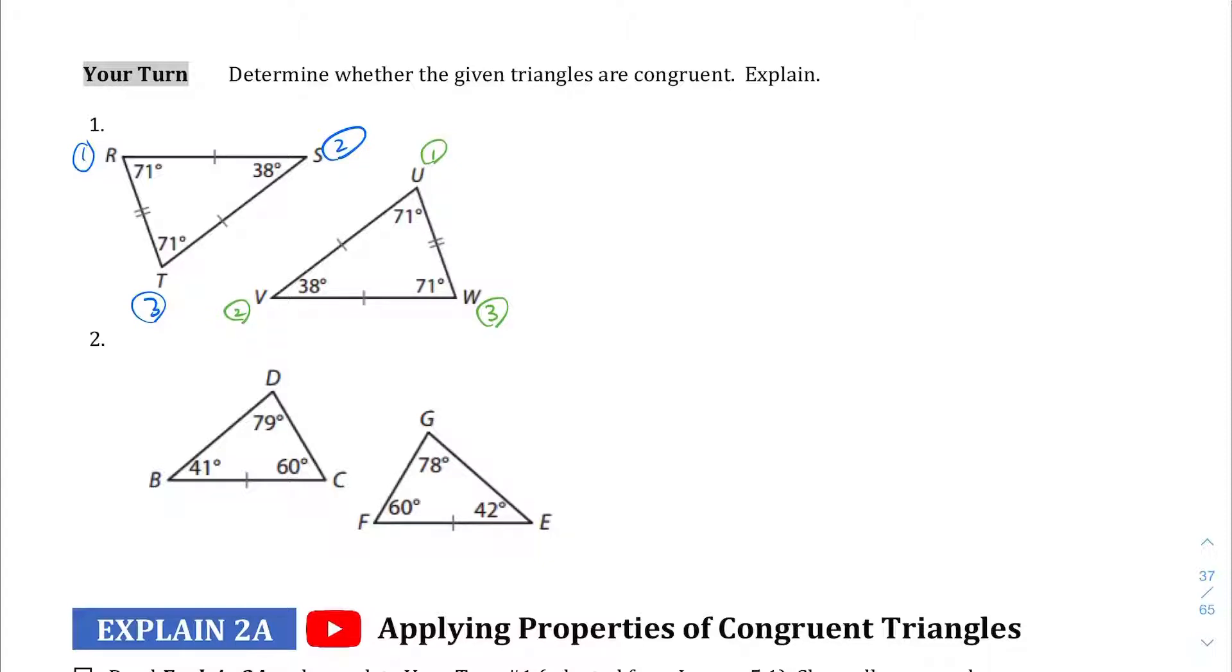If we line up the numbers instead of just looking at the letters, I find it easier to just line up the numbers. So one goes with one, which means angle R is going to be congruent to angle U. The blue two and the green two: angle S is congruent to angle V. And the blue three and green three: angle T is congruent to W.